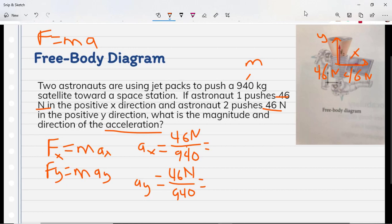With both of these, we're going to get the same answer. 0.049 meters per second squared. And 0.049 meters per second squared. And again, this is in the x direction, this is in the y direction. So if we kind of set this up, 0.49 here and 0.49 here, and I want to know that.